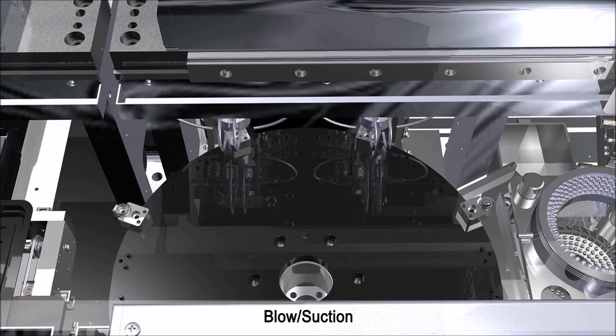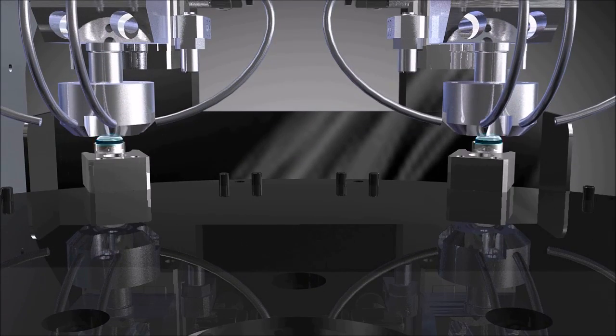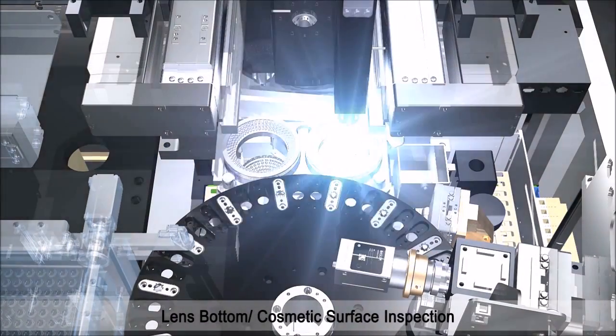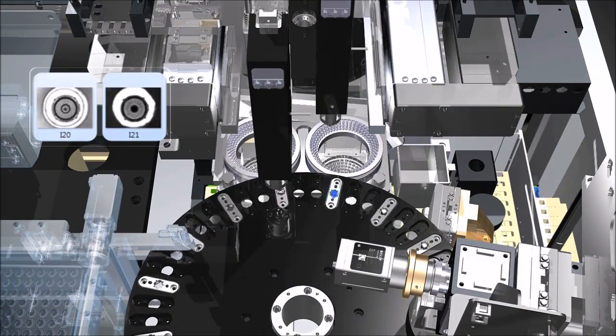In the cleaning process, foreign materials are eliminated by air blow suction. The cleaned assembly goes to inspection area and then foreign materials and scratches on the cosmetic surface of the lens bottom are inspected.